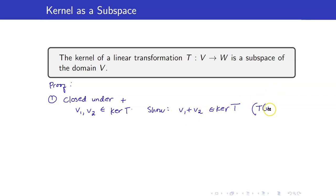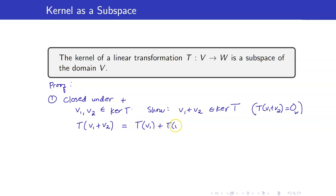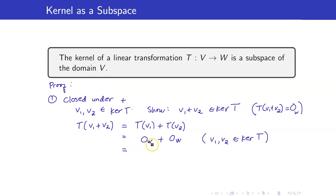To show V1 + V2 is in the kernel of T, we need T(V1 + V2) = 0 in W. Since T is a linear transformation, T(V1 + V2) = T(V1) + T(V2). But T(V1) = 0 because V1 is in ker(T), and similarly T(V2) = 0 because V2 is in ker(T). So T(V1) + T(V2) = 0 + 0 = 0. Therefore, V1 + V2 is in the kernel of T.